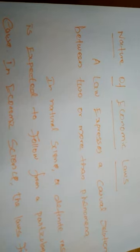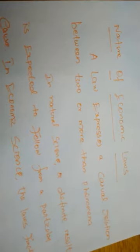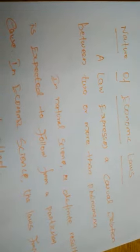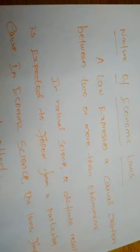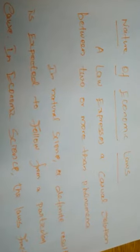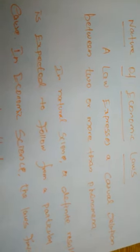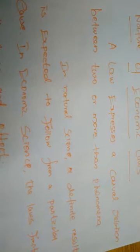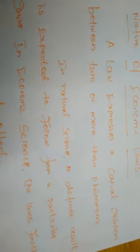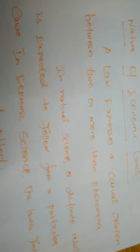Marshall also states that economics laws are statements of tendencies. Many economists express their results of analysis differently — some consider economics as a science and some as an art. We cannot accept the laws of economics as accurate. We can consider the laws of economics as approximate, but we can't accept them as accurate ones.